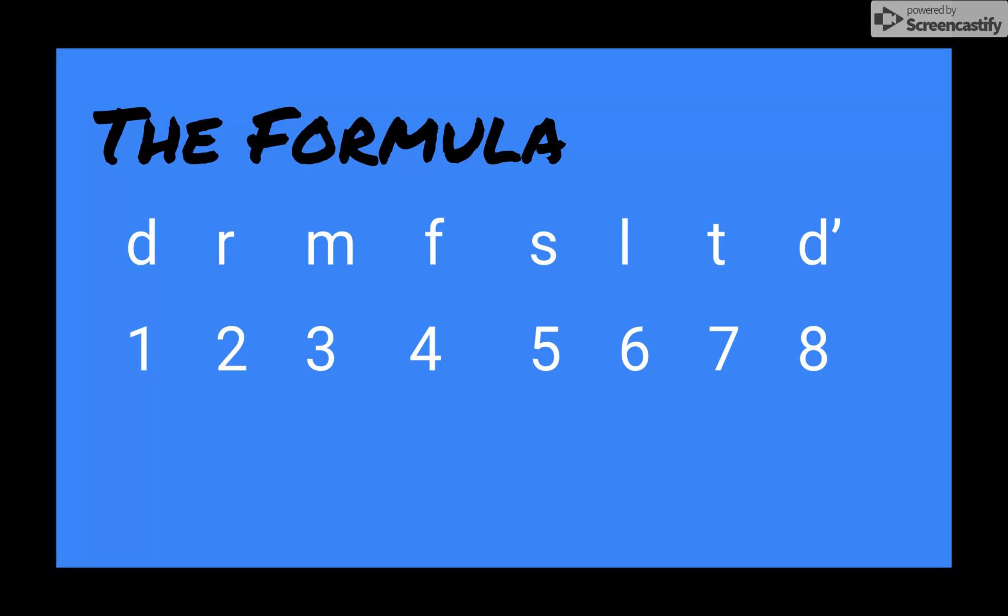It starts on Do and it ends on Do, or with our scale degrees 1, 2, 3, 4, 5, 6, 7, 8. Scale degree 1 and scale degree 8 are going to be the same because low Do and high Do are the same.